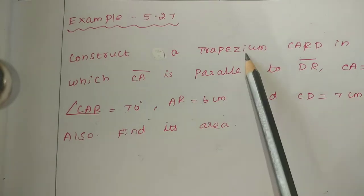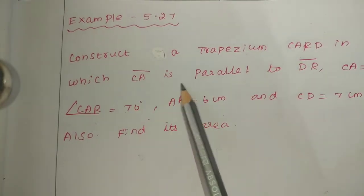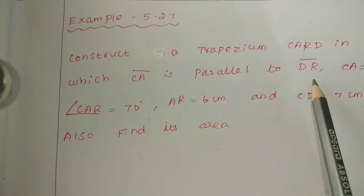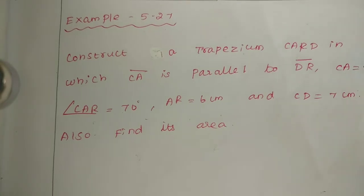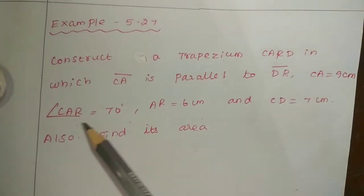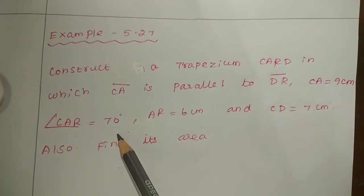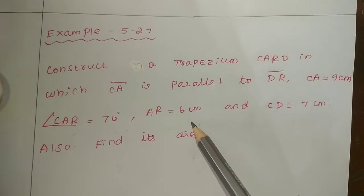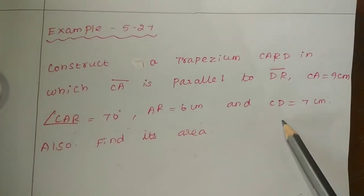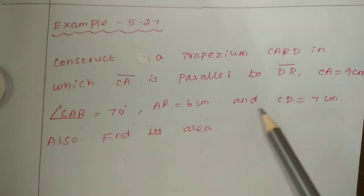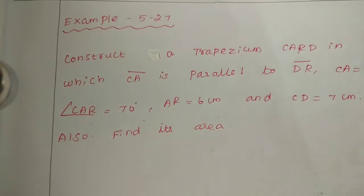Construct a trapezium CARD in which CA is parallel to DR. CA equal to 9 centimeter, angle CAR equal to 70 degree, AR equal to 6 centimeter and CD equal to 7 centimeter. Also find its area.